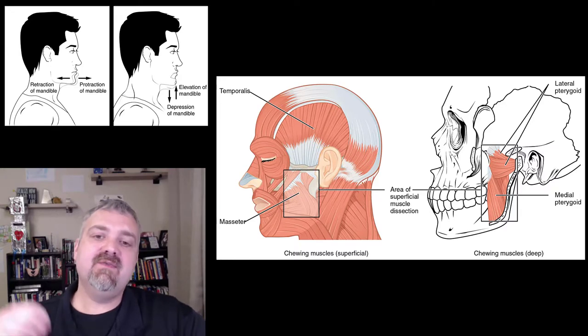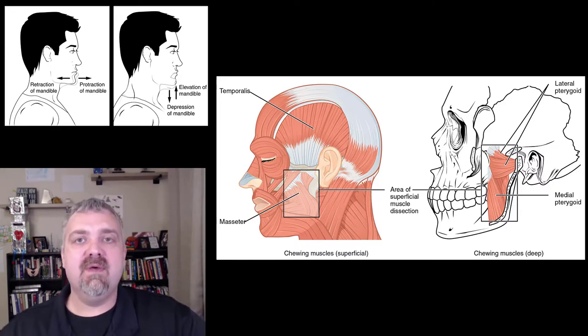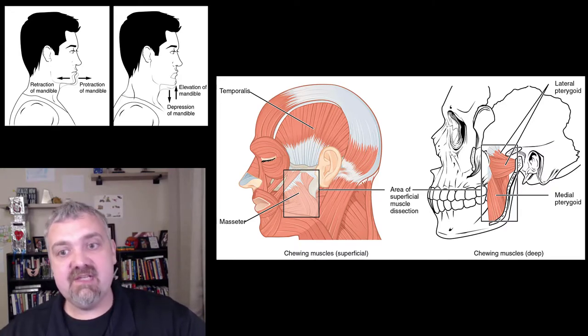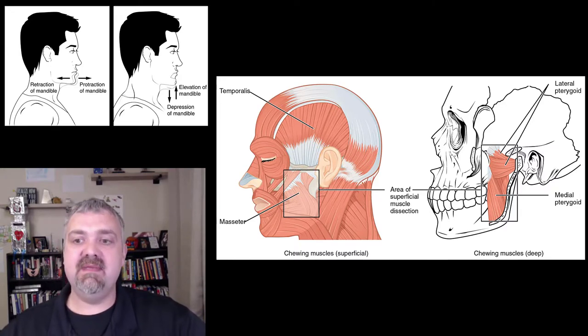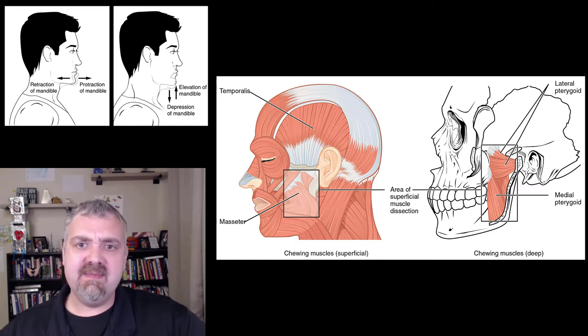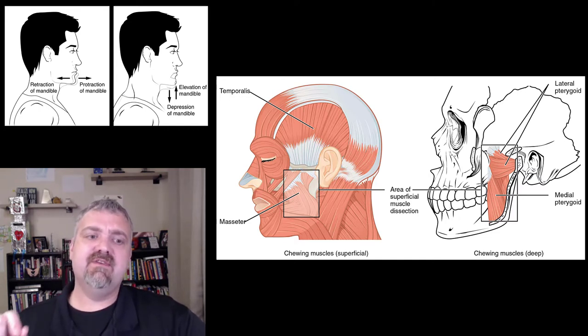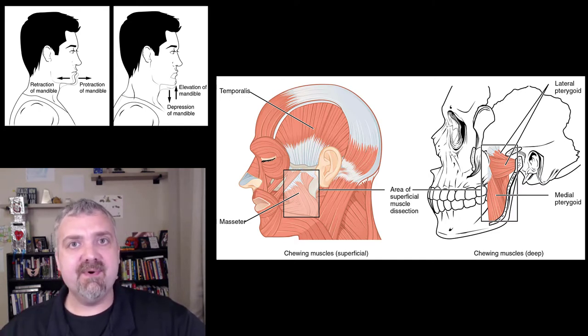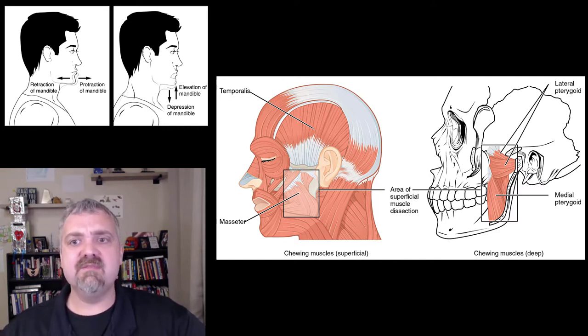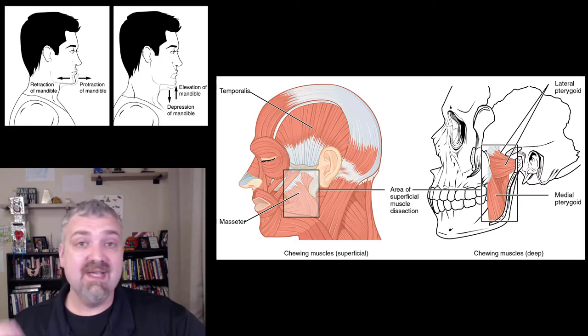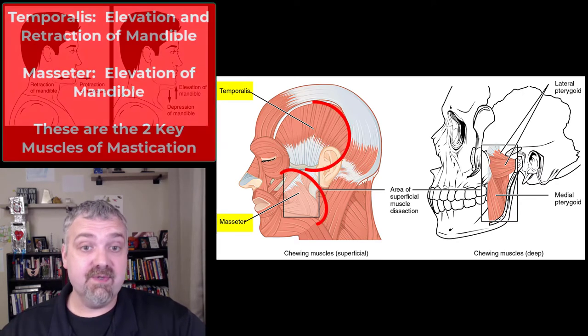Hey everybody, Dr. O here. In this video, we're going to cover all the muscles of mastication — mastication meaning chewing. In a 100-level anatomy class, I'm usually just going to focus on the temporalis and the masseter, but I do want to explain a couple more that have some pretty critical roles. Let's start with those two.